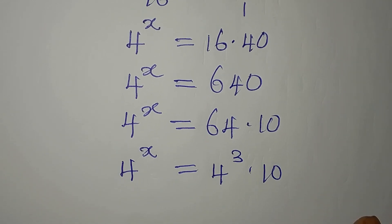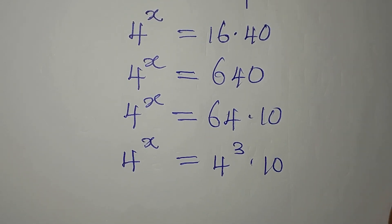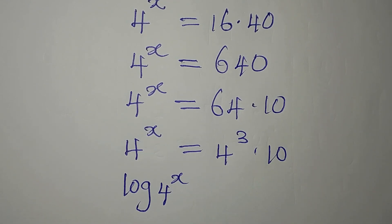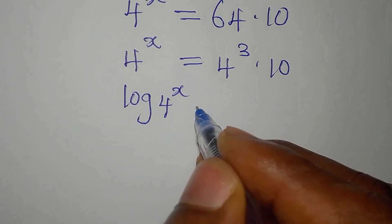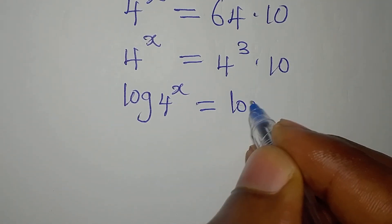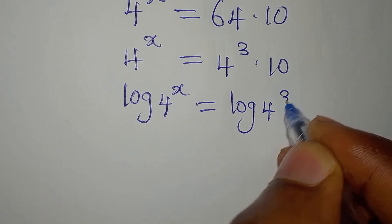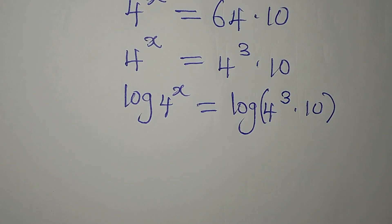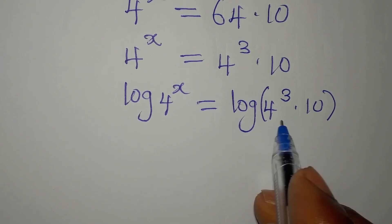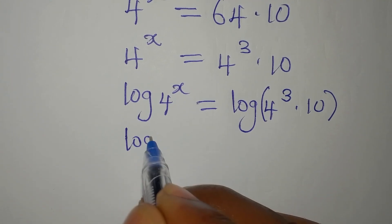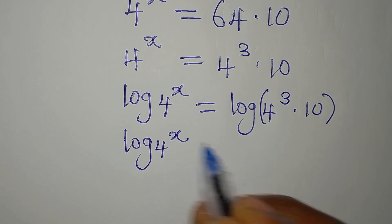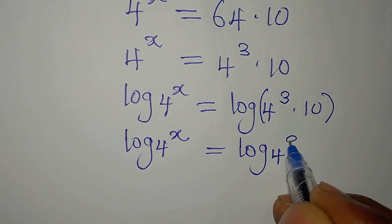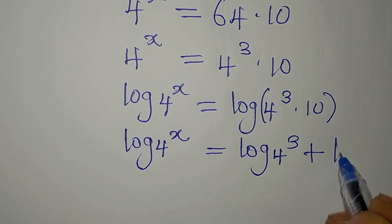This is the point where we take the log of both sides. So we take log of 4 to the power of x, and applying one of the laws of logarithm, we have log 4 to the power of x equals log 4 to the power of 3 plus log 10.